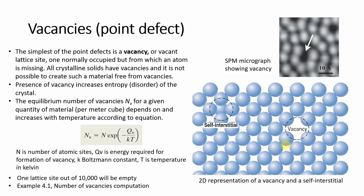Point defect — Vacancy: the simplest point defect is a vacancy, or a vacant lattice site — one normally occupied but from which an atom is missing. You can see in the two-dimensional representation that a crystal lattice is given and one lattice site is missing, meaning one atom is absent, and this is called a vacancy. All crystalline solids have vacancies, and it is not possible to create a material that is free from vacancies.